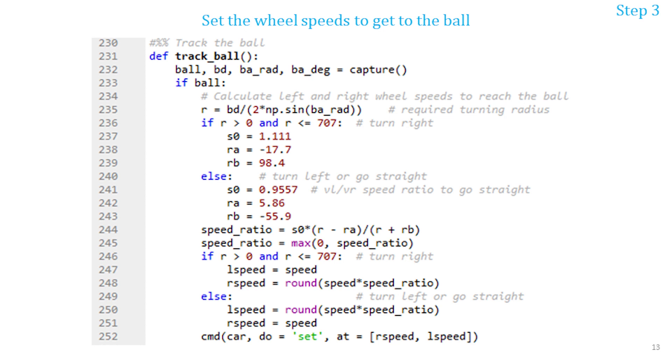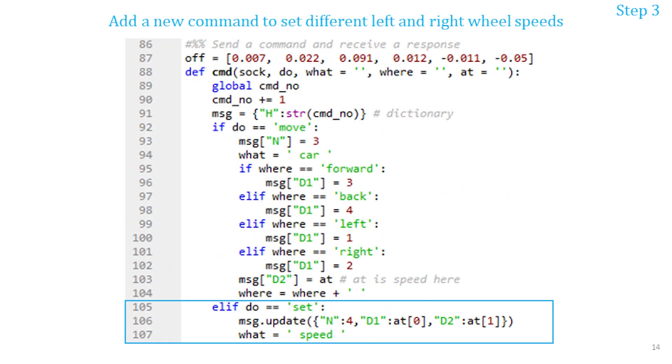Besides the measurement and fitting errors the accuracy of the actual trajectories depend on such factors as blurriness of the images captured by the moving car and the battery charge level. To set different speeds of the car wheels I added an additional command to the CMD function created in the previous episode. I used the existing command number 4 in the communication protocol. This command sends two values to the car's controller: the speed for the right wheels and the speed for the left wheels. I passed these speeds in the list at.